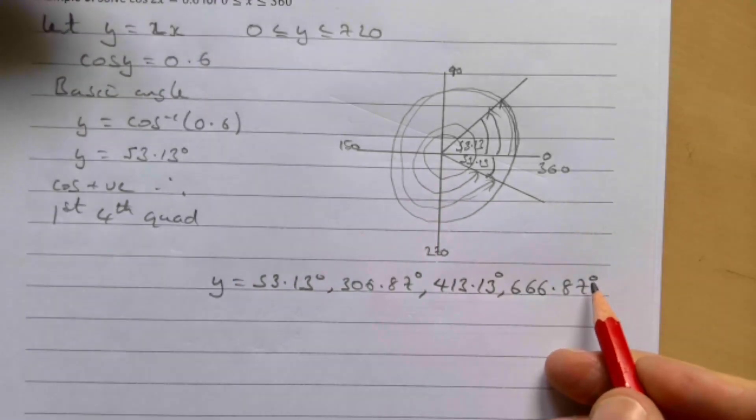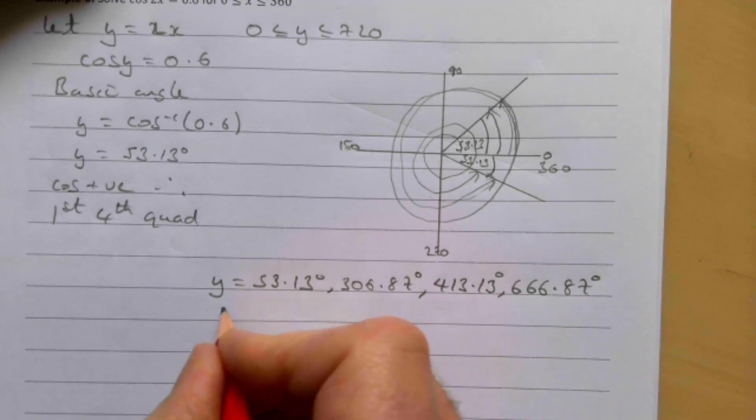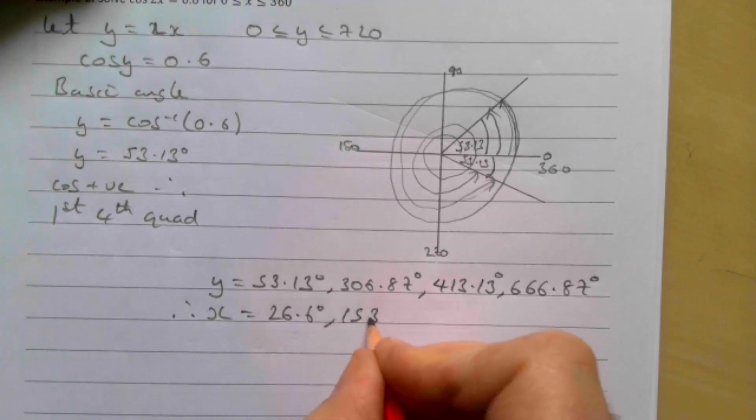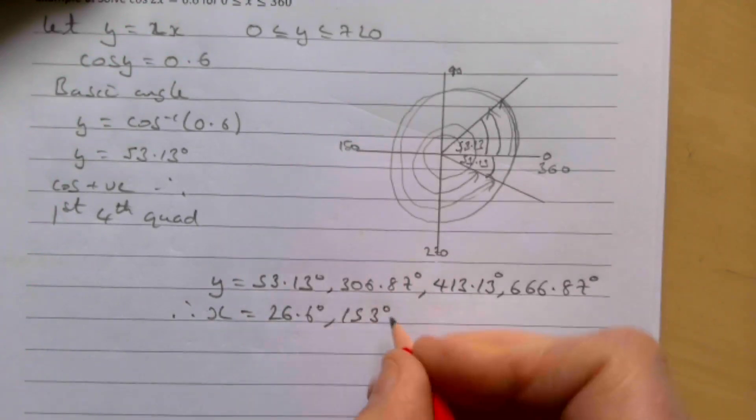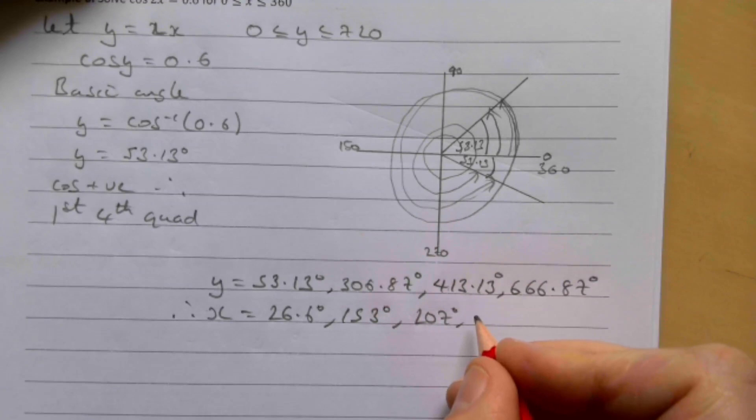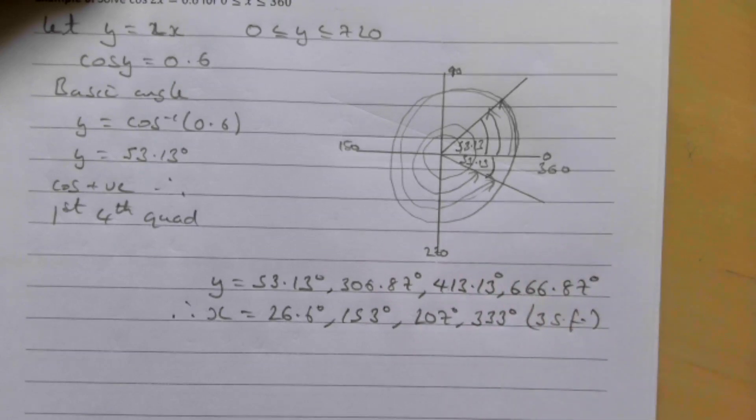Because we've gone around twice, that covers all our solutions. Remember we asked to work out x, and to work out x we've got to divide by 2. So 2x equals all those, therefore x is each of those divided by 2. So we get 26.6 degrees, then 153 degrees, then 207 degrees, and 333 degrees. Those are all given to 3 significant figures.